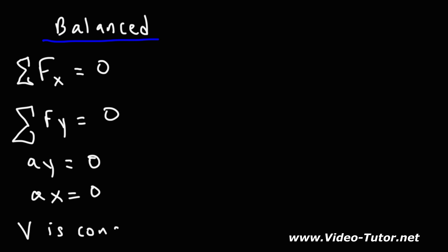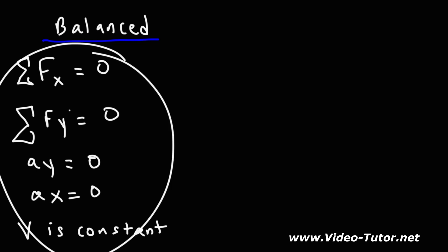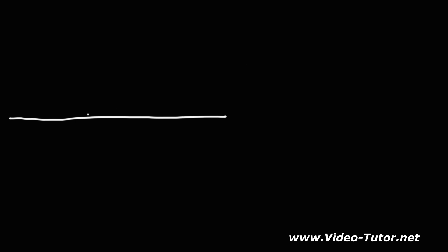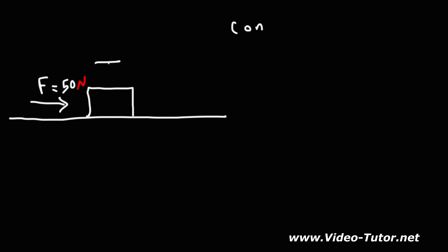If there's no acceleration, that means the velocity is not changing — the velocity is constant. Whenever you have a balanced situation where all the forces are balanced, these conditions hold. Now let's look at another situation: a block with an applied force of 50 newtons, and we're told the block is moving to the right at constant speed.